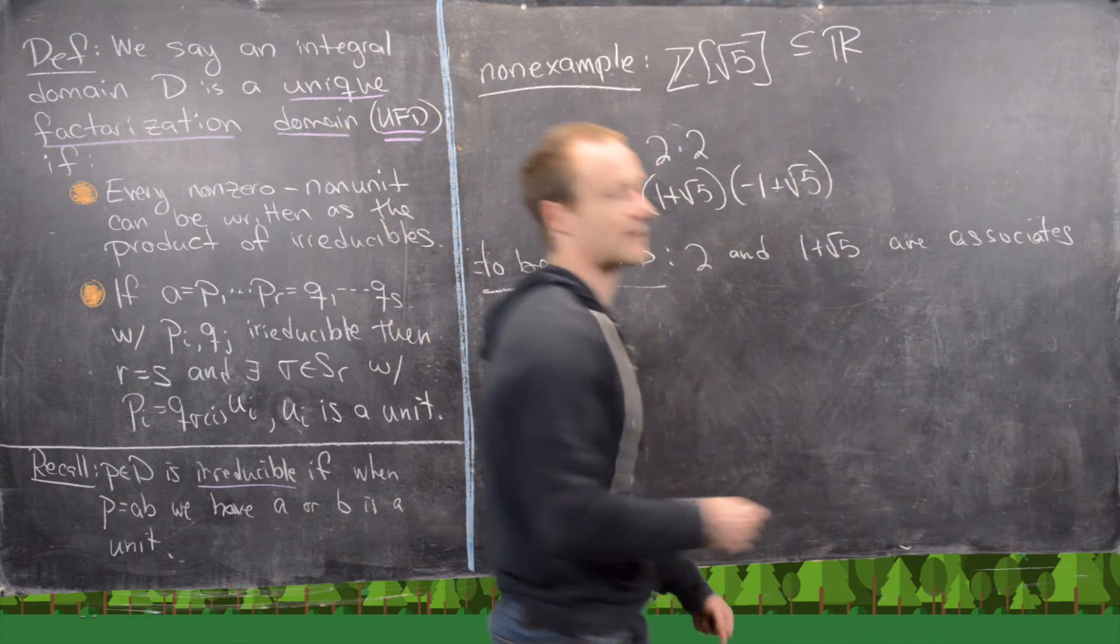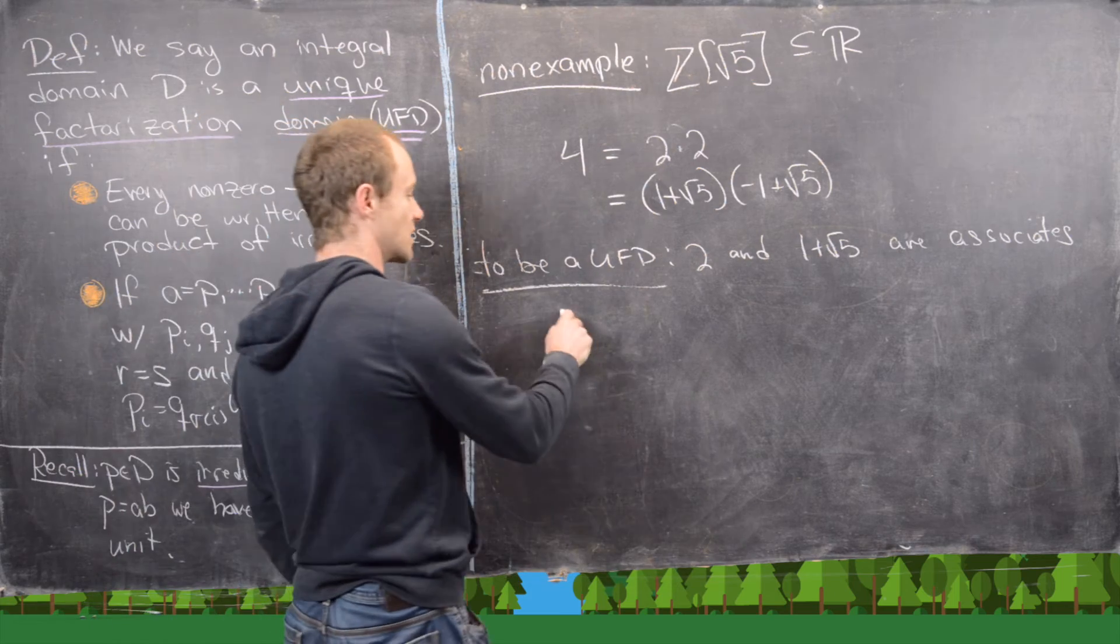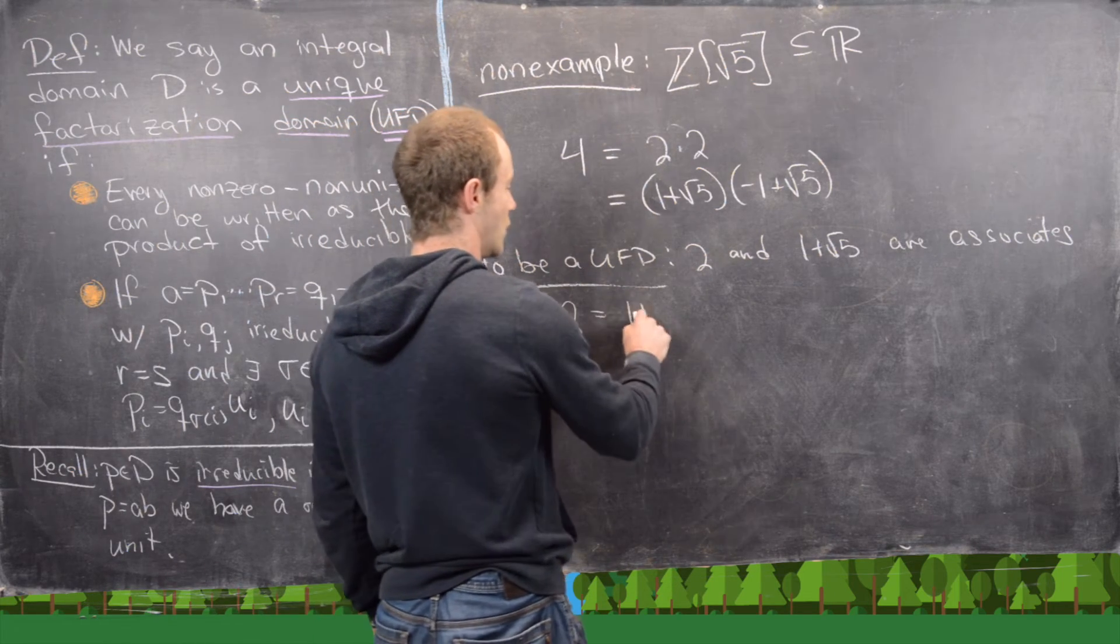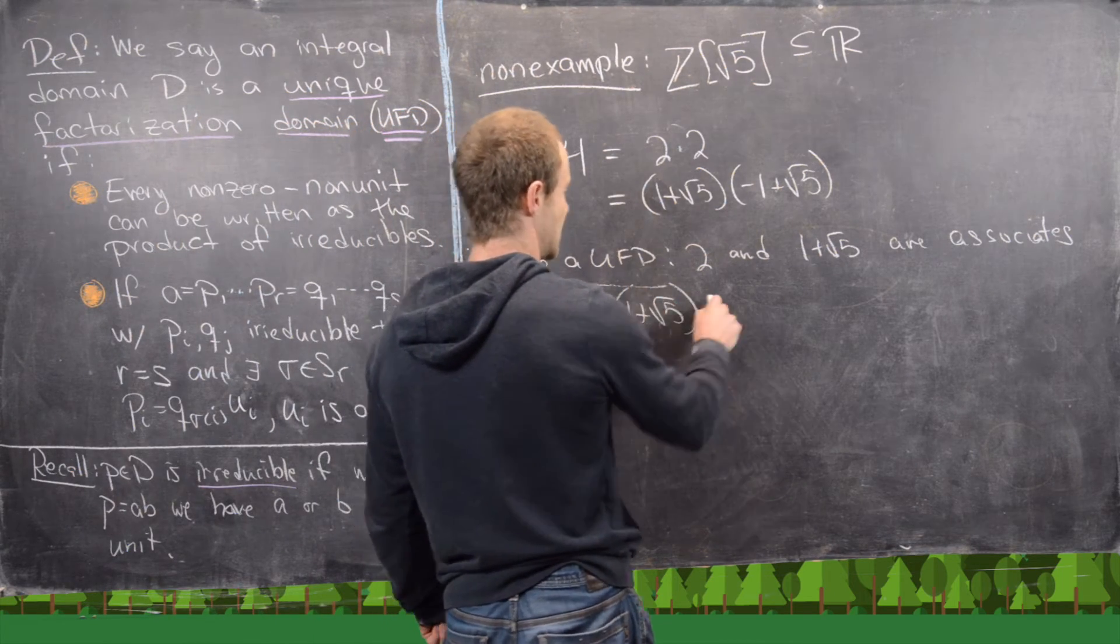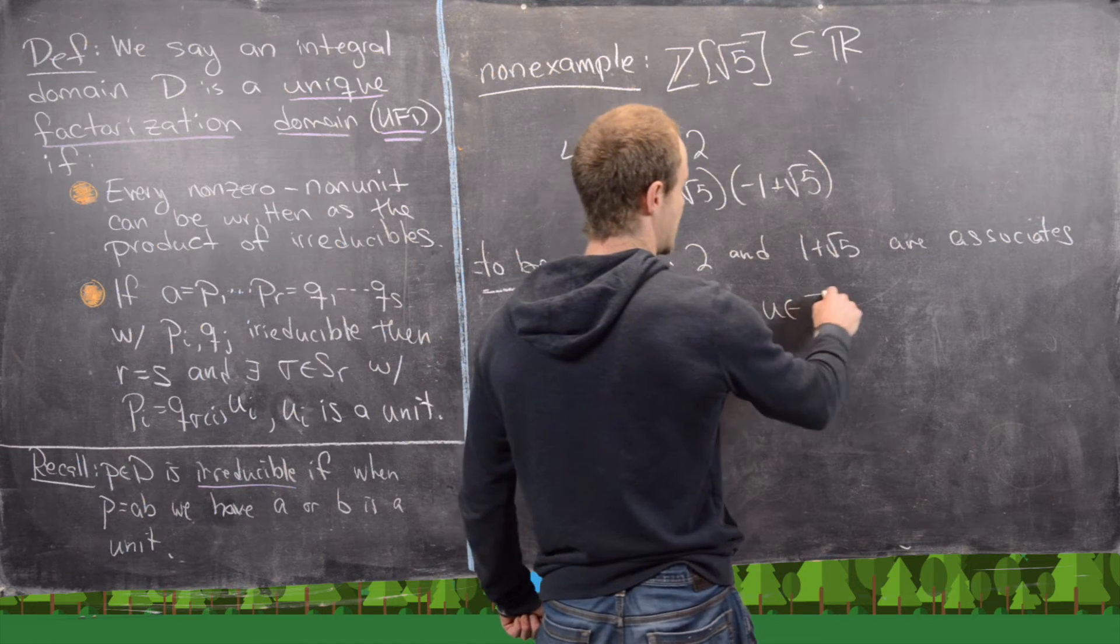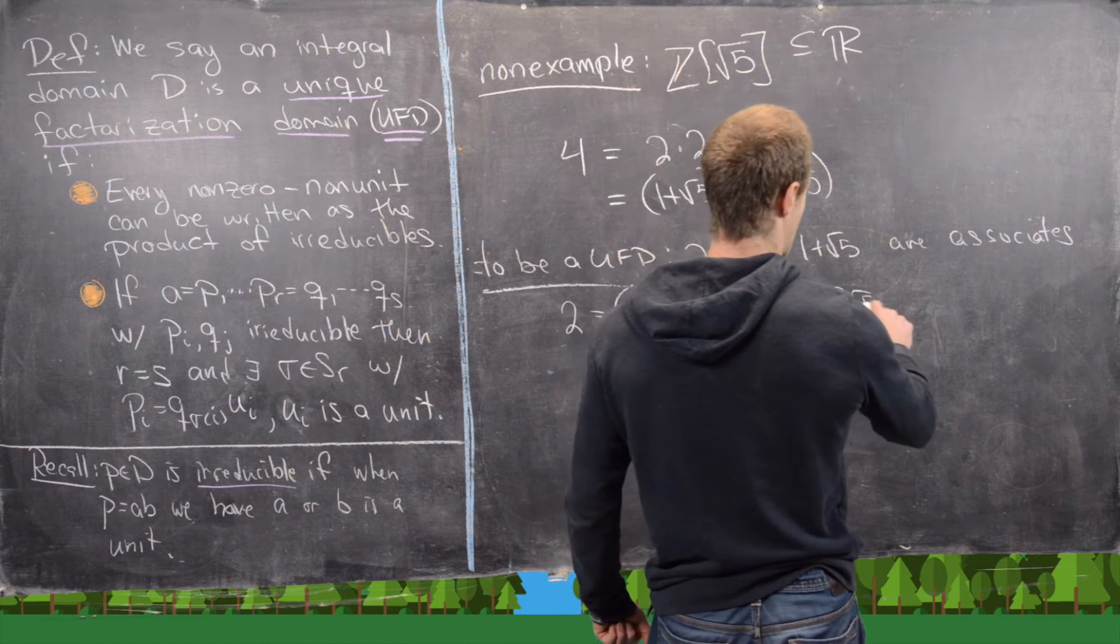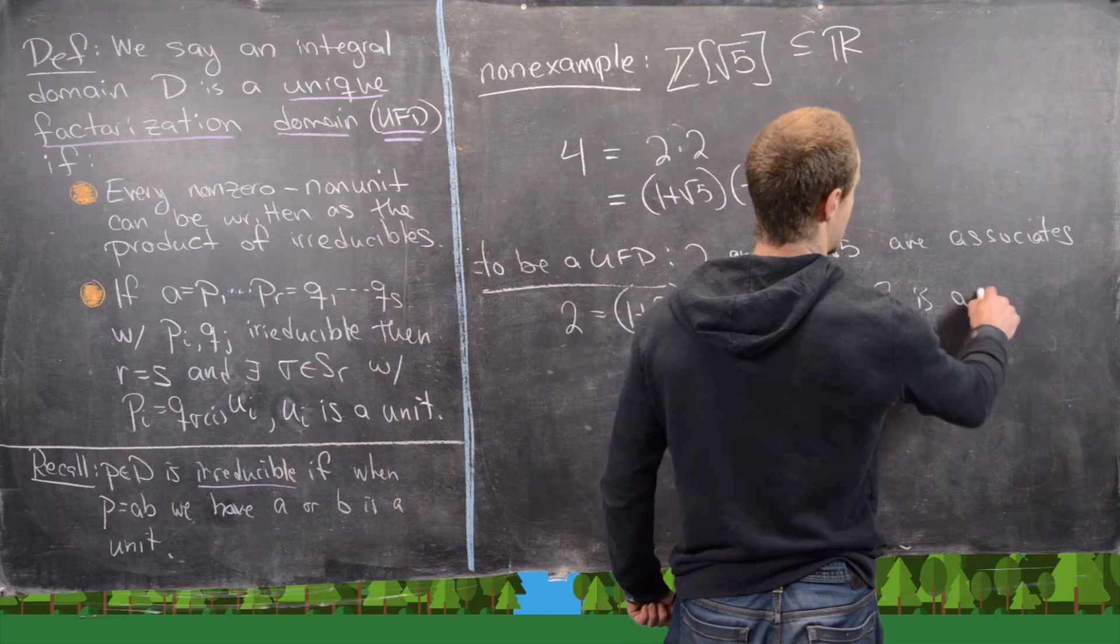In other words, 2 equals 1 plus root 5 times U, where U in Z adjoin root 5 is a unit.